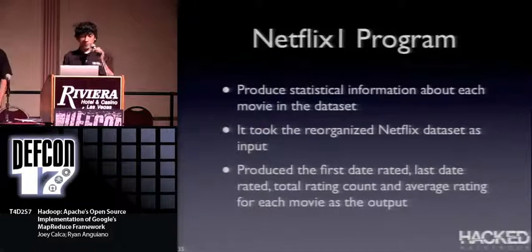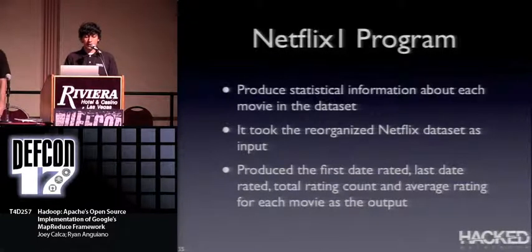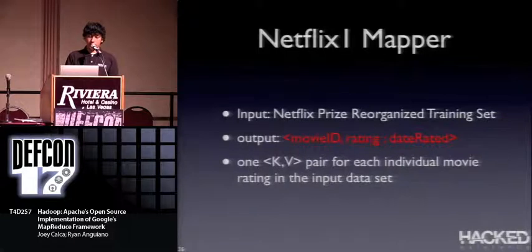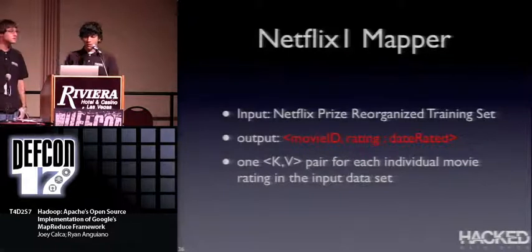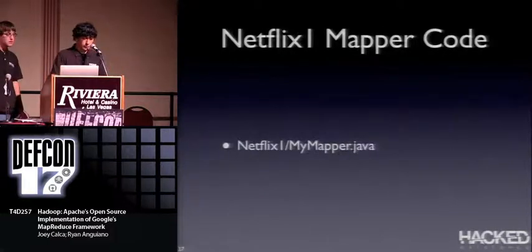The first program we wrote for Netflix produced statistical information about each movie in the data set. For every movie in the reorganized data set, we produced: the first date rated, the last date rated, the total rating count, and the average rating. The mapper takes the reorganized training set and outputs movie ID as the key, with rating and date rated as the value — producing one key-value pair for each individual customer rating of a movie.